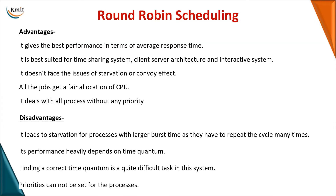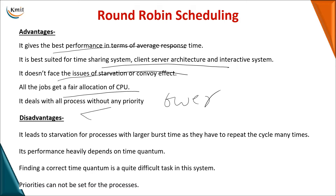The advantages of Round Robin scheduling include best performance because CPU time is shared among all processes. It is generally used in client-server architecture. There is no starvation or convoy effect, and it is a fair allocation — each process gets its own chance. Smaller processes do not wait for longer ones, and lower priority processes do not wait for higher priority ones.